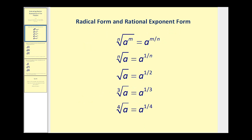Let's first review radical form versus rational exponent form. The nth root of a to the m power is equal to a to the power of m divided by n. So if we have the nth root of a, this would be a to the first, so in rational exponent form we'd have a to the power of one divided by n.